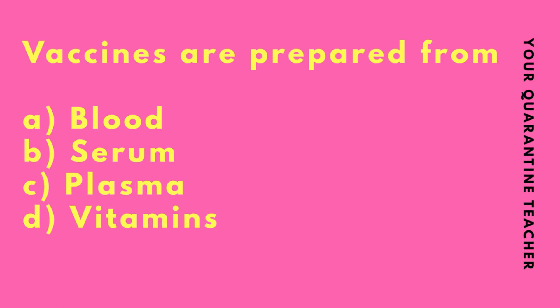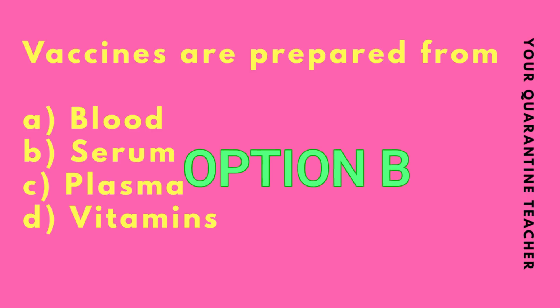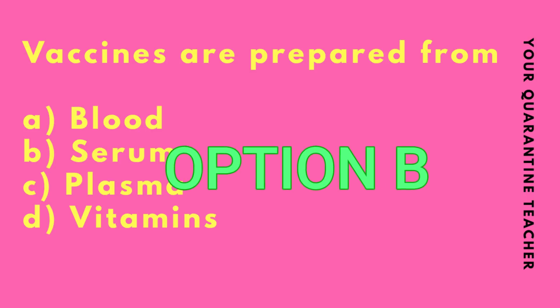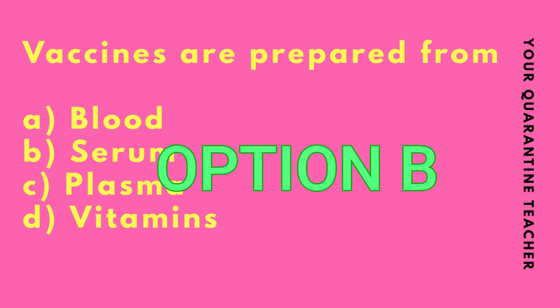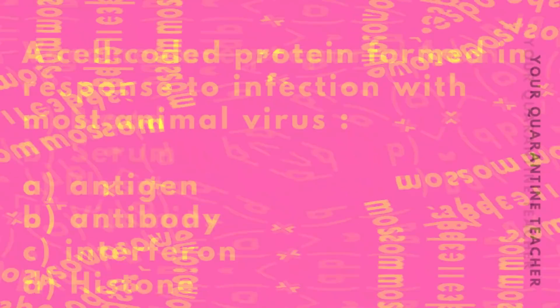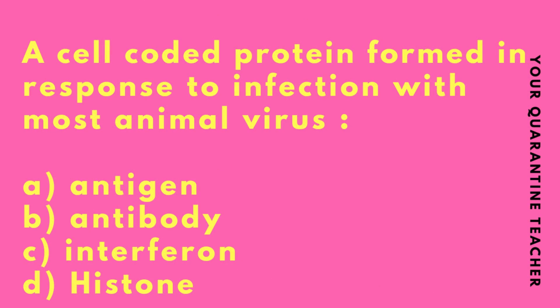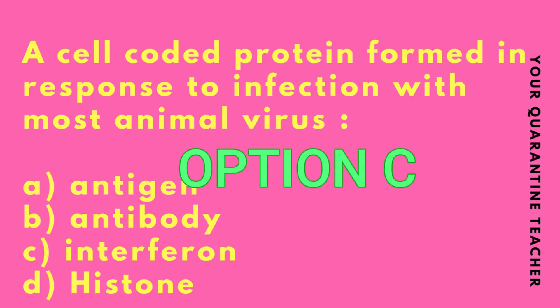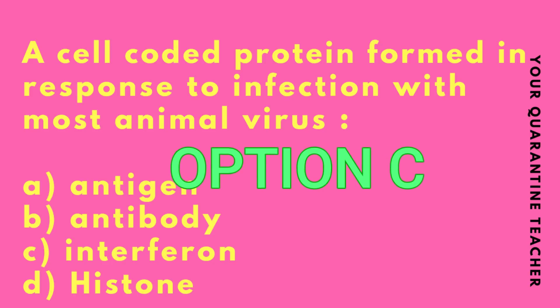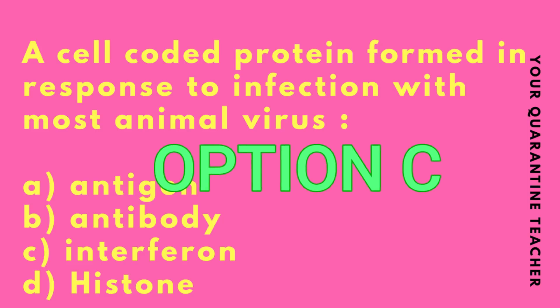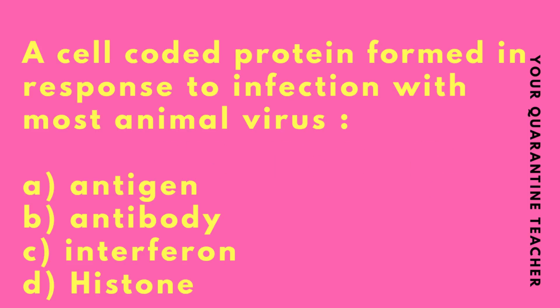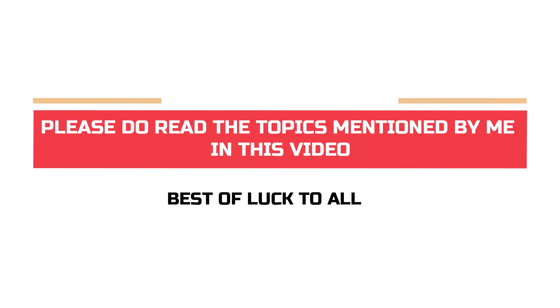Vaccines are prepared from which of the following? Then, a cell-coded protein formed in response to infection with most animal viruses — the answer is Option C Interferon, which is the correct answer. These are the prepared questions I have selected from the previous question paper.